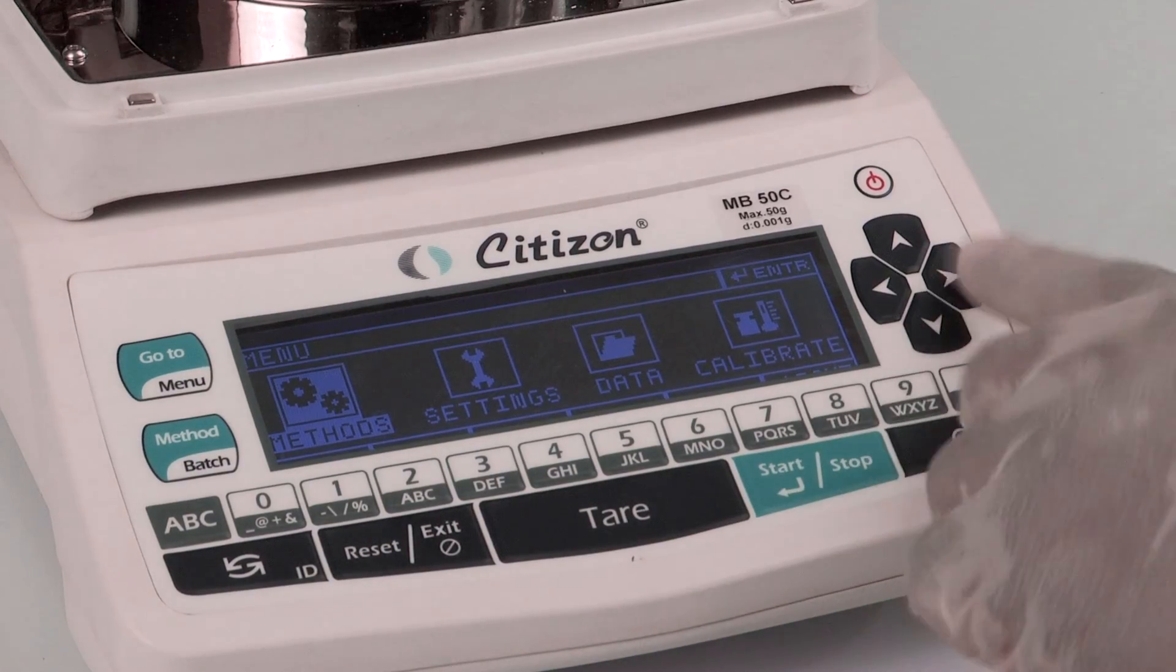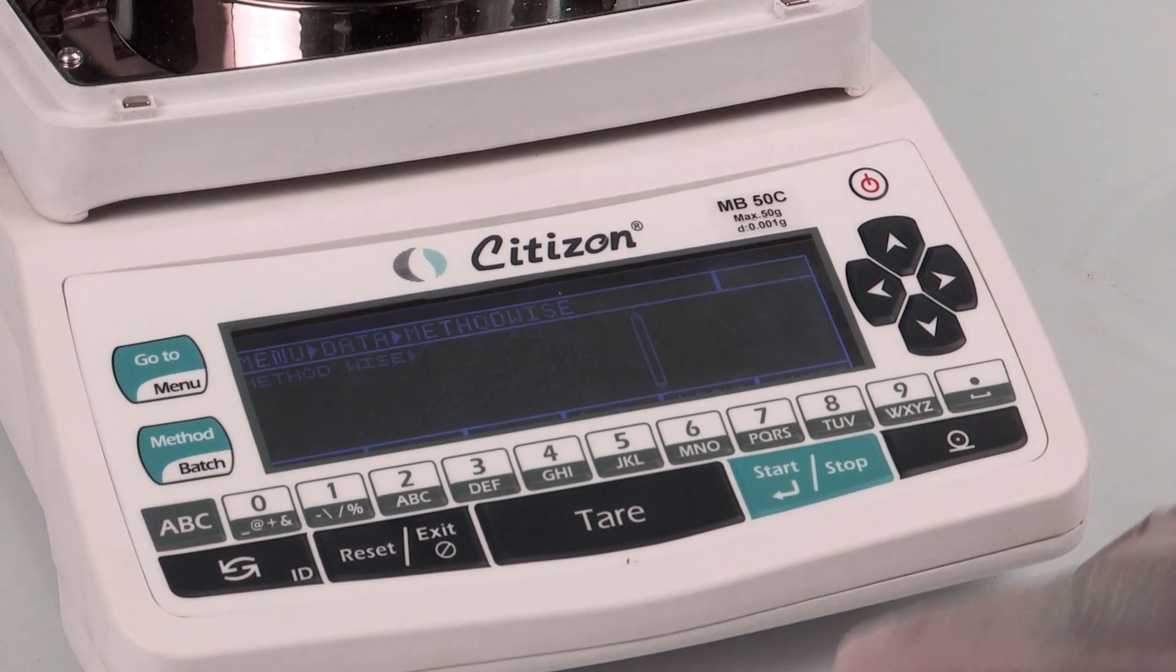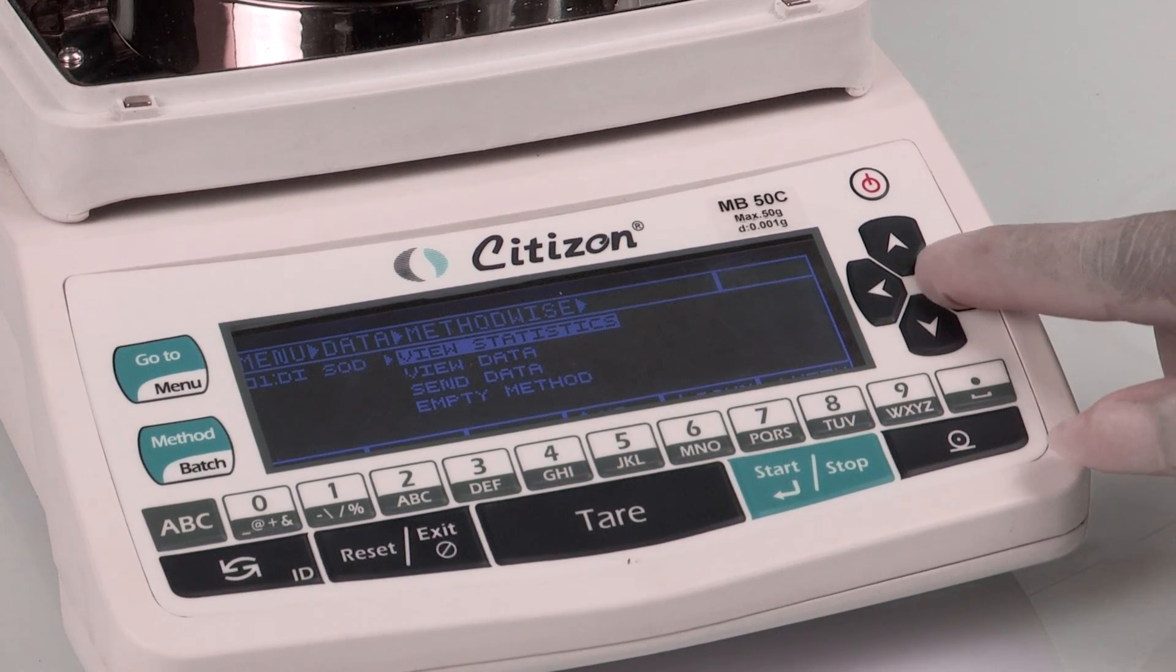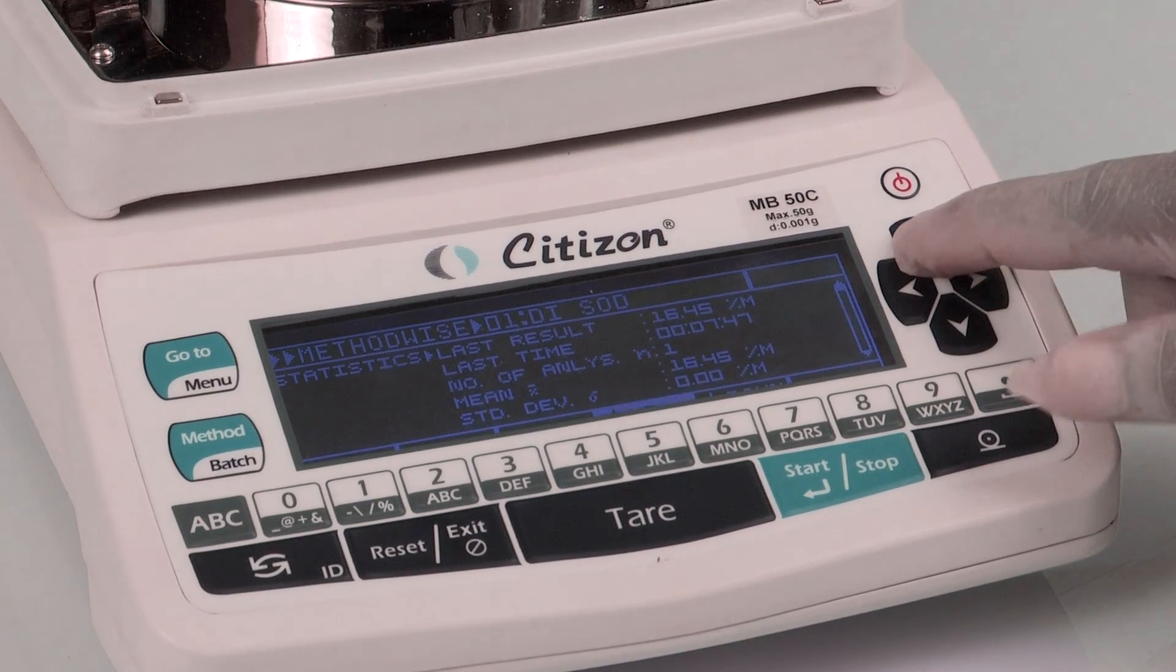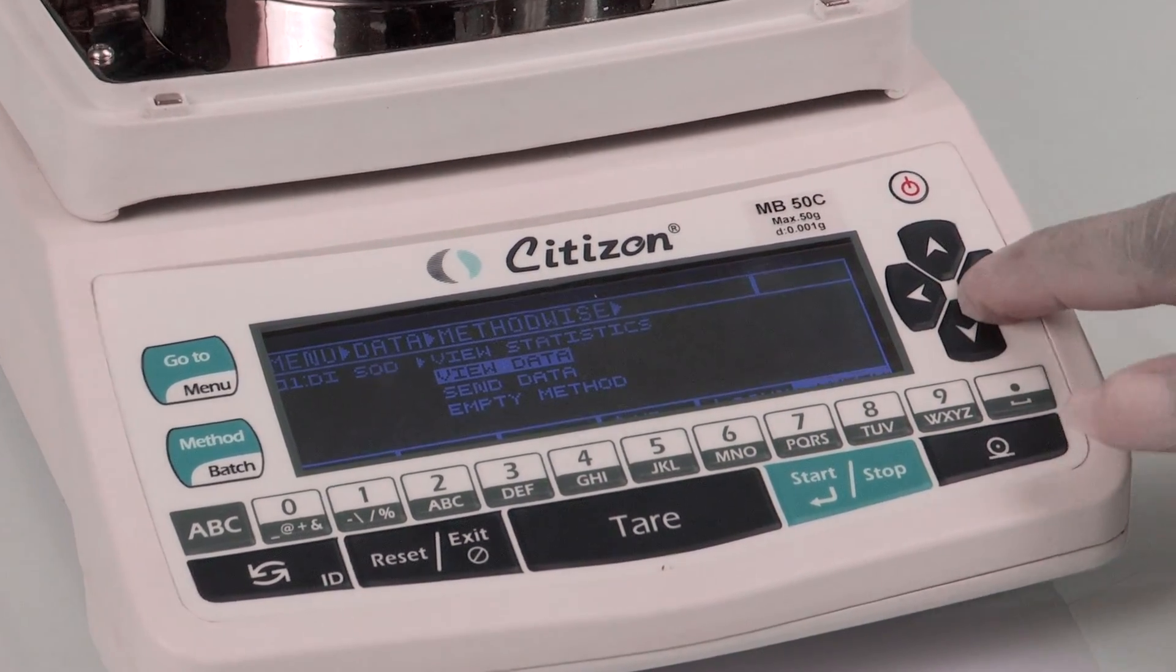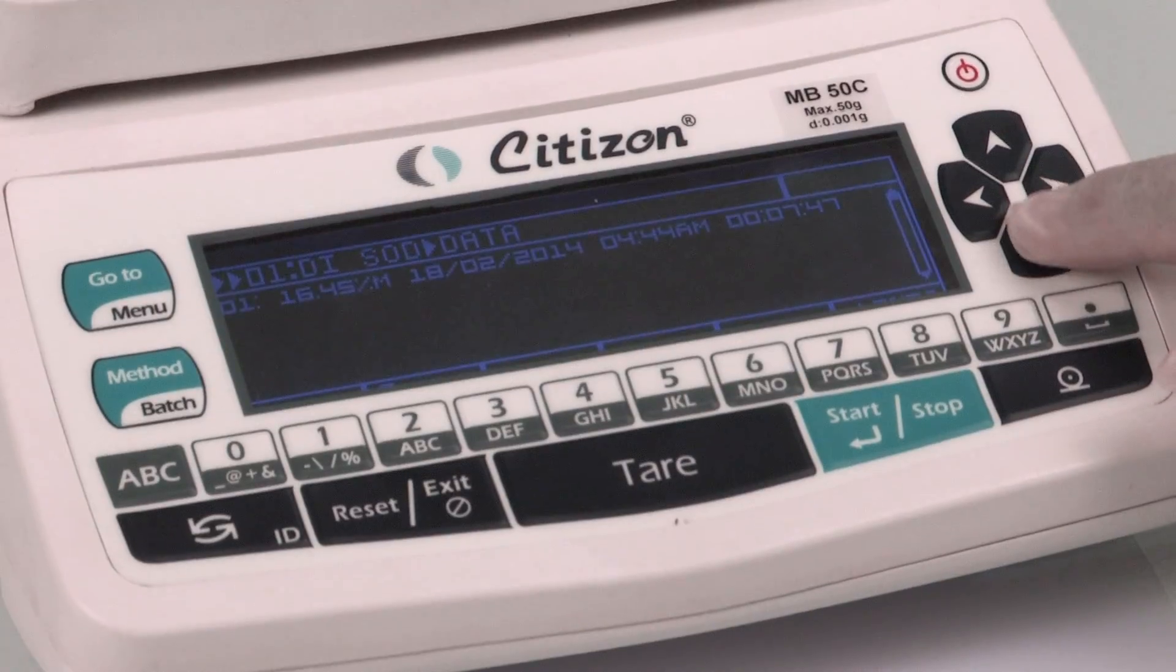Storage capacity of thousand parameters in the form of methods or batches extends flexibility to the operator. It offers the feature of statistics with the capability to display and print previous 9,999 measurements based on each method or batch. This proved to be handy for research-related tasks.